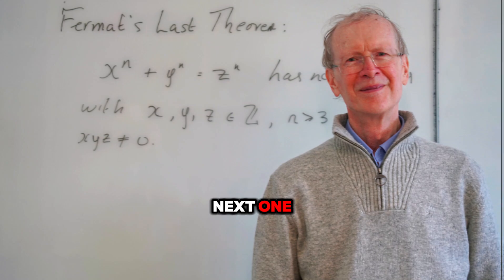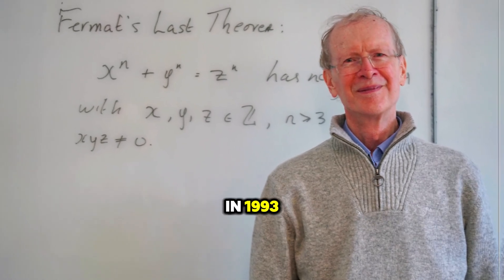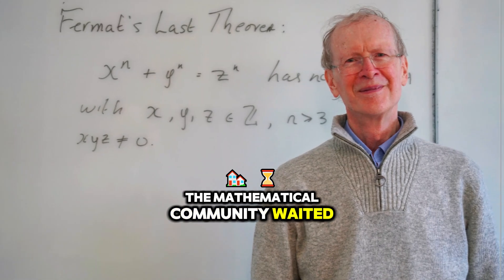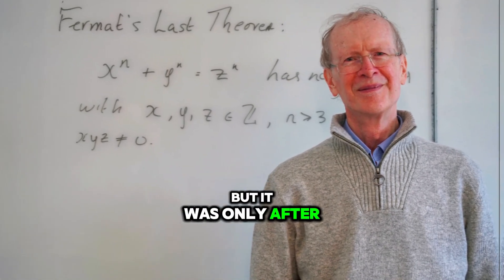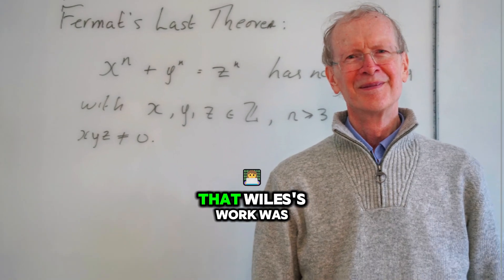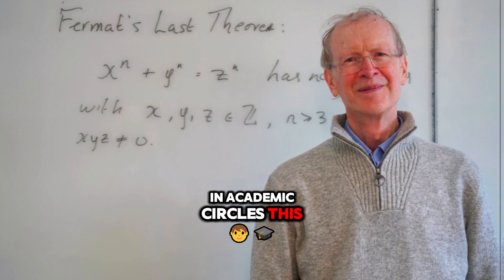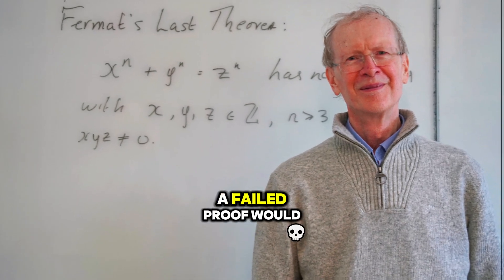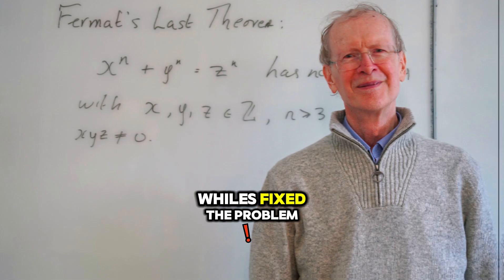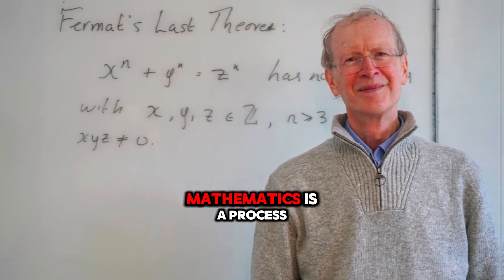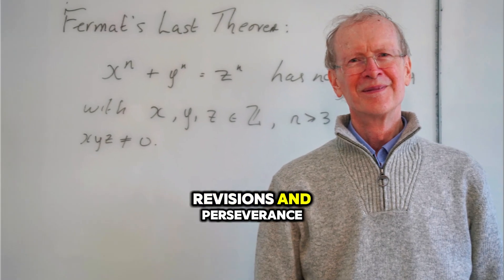After Wiles presented his proof to the world in 1993, the mathematical community waited in anticipation. The moment was historic, but it was only after the flaw in the proof was discovered that Wiles' work was truly scrutinized. In academic circles, this was a big deal. A failed proof would have been a massive embarrassment. But the fact that Wiles fixed the problem and came back stronger showed the world that mathematics is a process, a journey full of challenges, revisions, and perseverance.